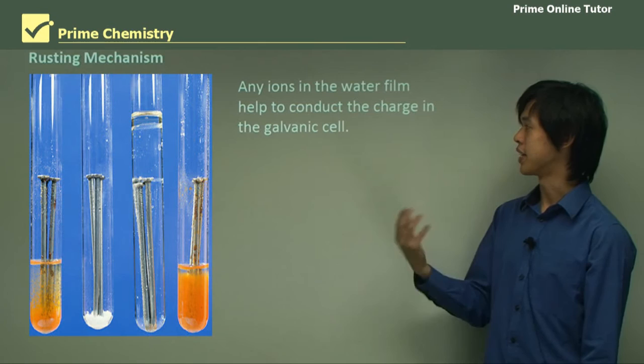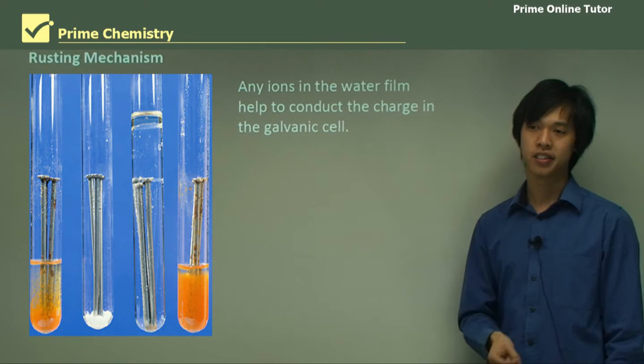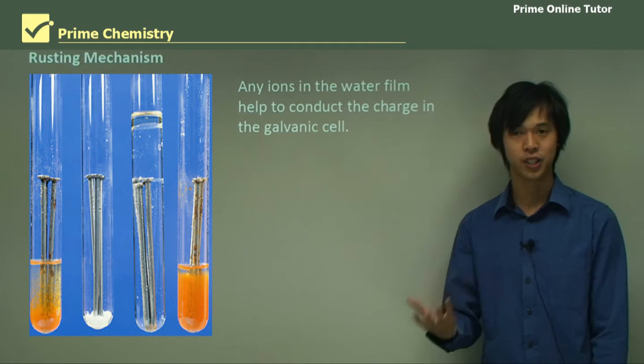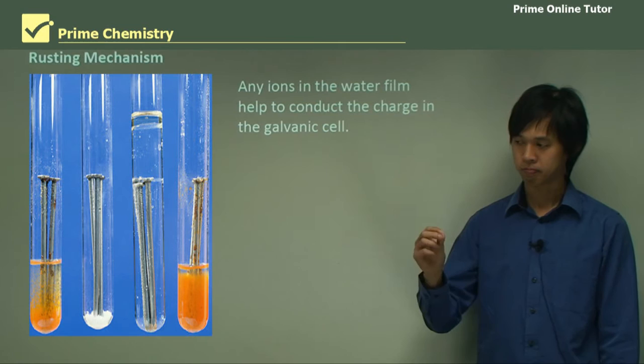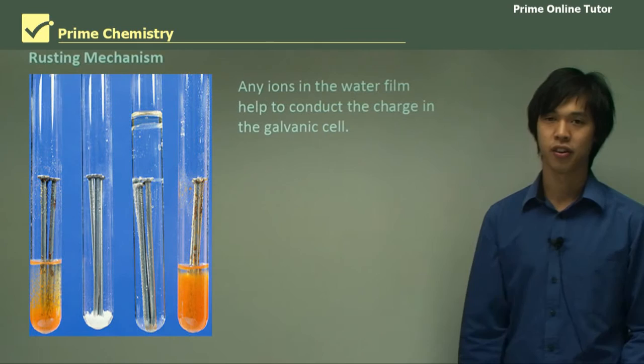Any ions in the water film help to conduct the charge in a galvanic cell. If you have a drop of pure water, it won't be as bad as a drop of salt water. That's why the value of your car, if you're living near the ocean, is lower than the value of a car that's nowhere near the ocean — because that salt water really does accelerate the rusting and corrosion process.